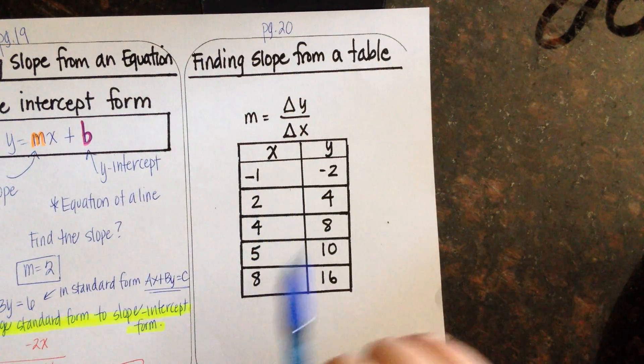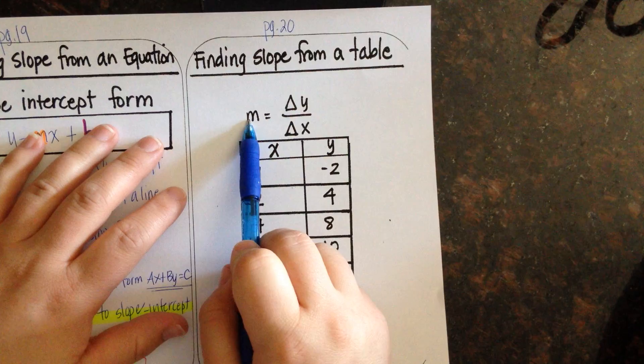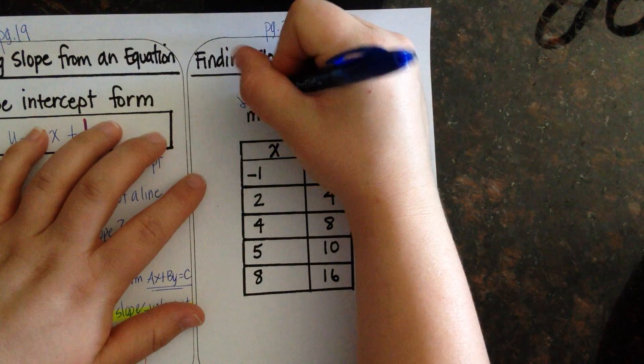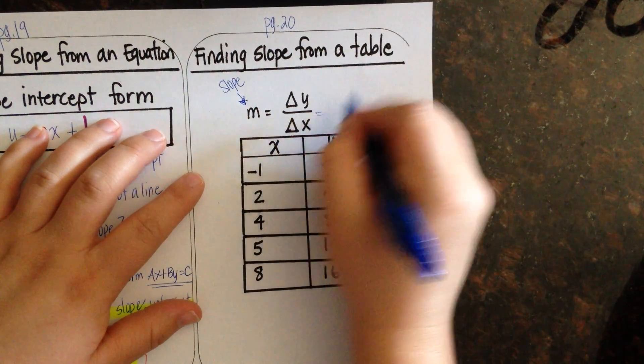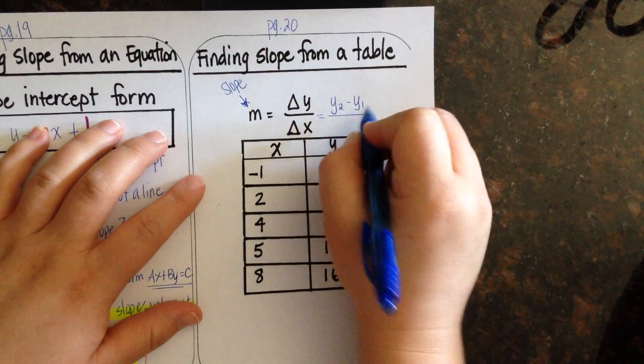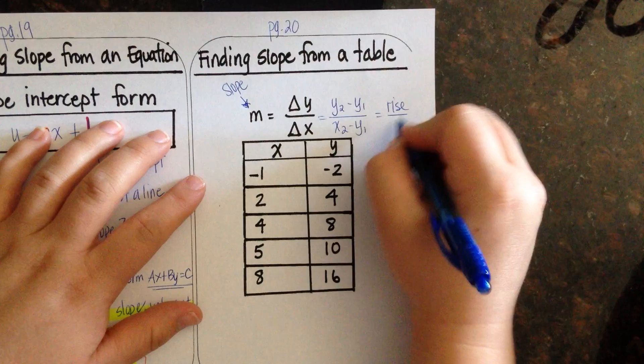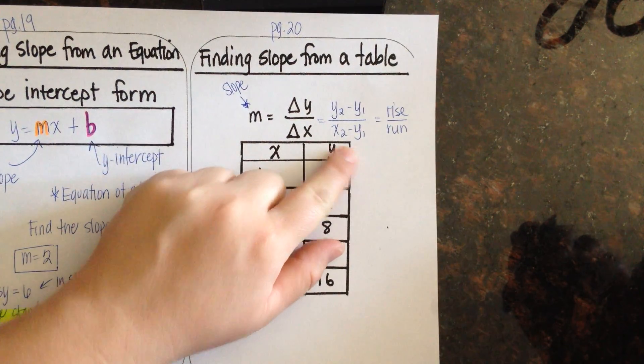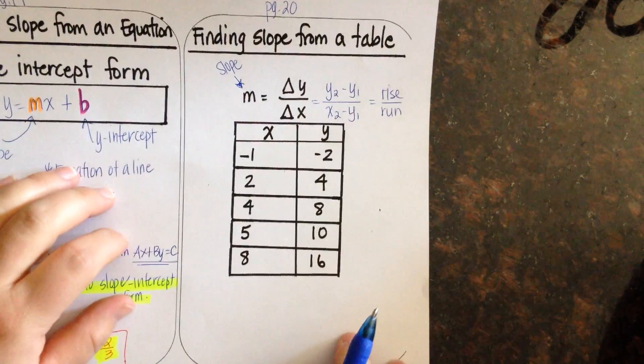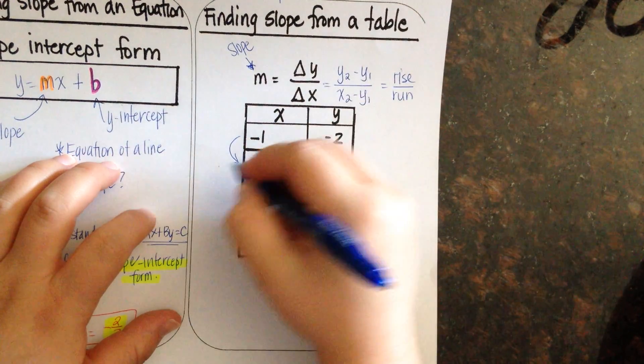This is finding slope from a table. This is going to be probably the harder ones to look at as you go through this. But remember, m, that's my slope. My change in y, it's the same thing as saying y2 minus y1 over x2 minus x1, or rise over run. Now, since we're not using a table, we're going to be looking more at the change in y over the change in x. And so what we're going to do is go from each value, and we want to determine what the change is.